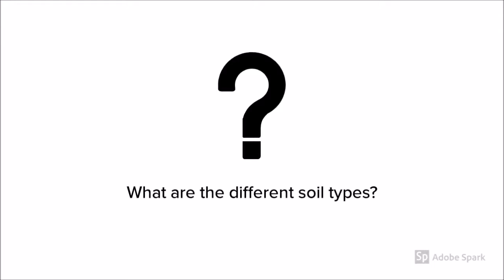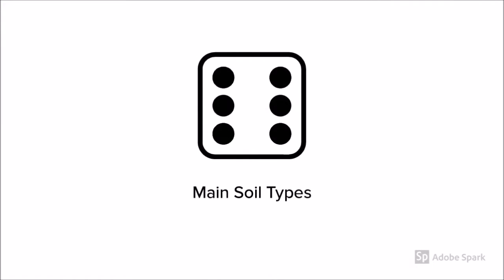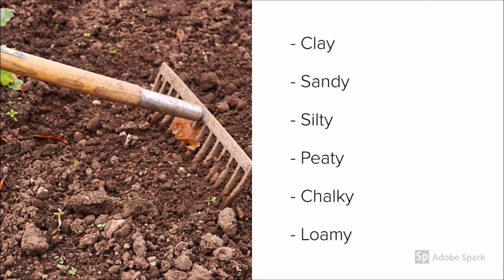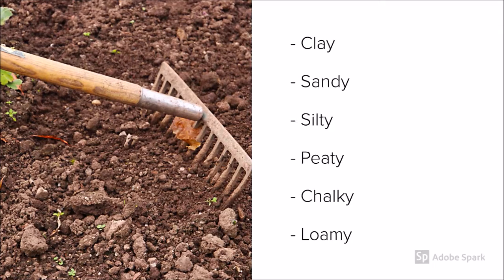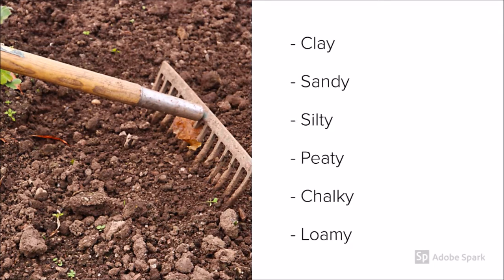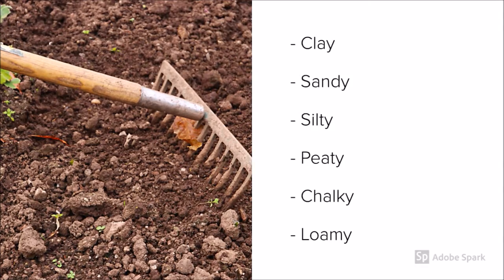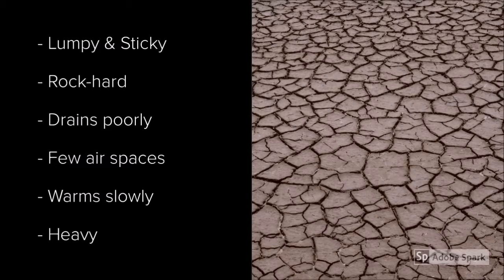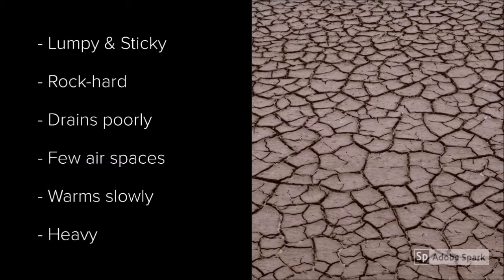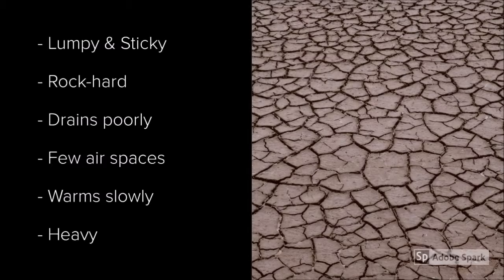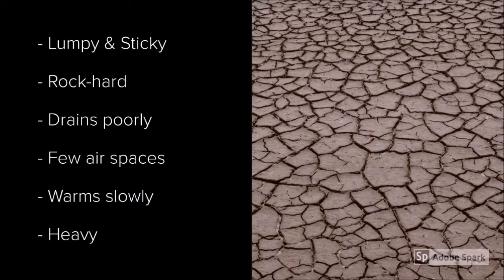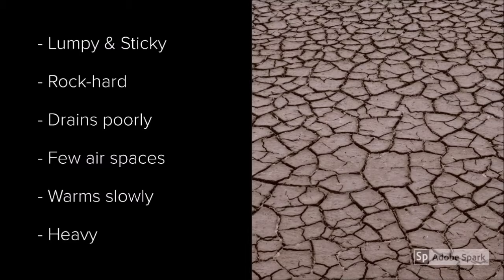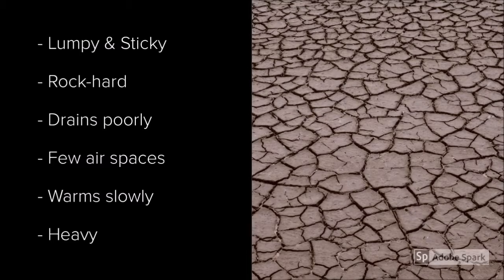So what are the different types of soil? There are six main types: clay, sandy, silty, peaty, chalky, and loamy. Clay soil feels lumpy and sticky when very wet, and rock hard when dry. Clay drains poorly, has few air spaces, warms slowly in spring, and is heavy to cultivate. However, if drainage is improved, plants grow well as it holds more nutrients than many other soils.